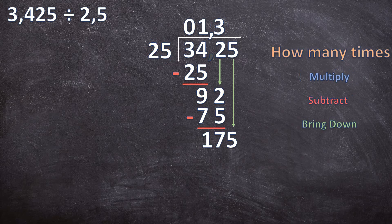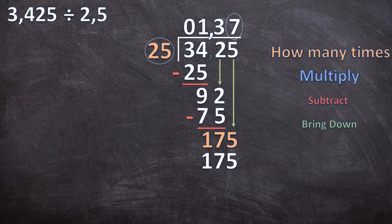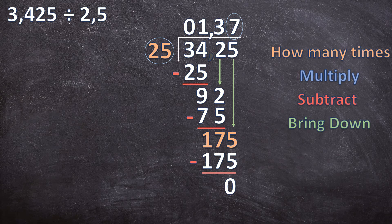Start again with our steps. How many times can 25 go into 175? Seven times. Multiply: 7 times 25 is 175. Subtract: 175 minus 175 is 0. Bring the next digit down — there is no next digit and we end exactly on a zero. So our answer for 3,425 divided by 2,5 is 1,37.